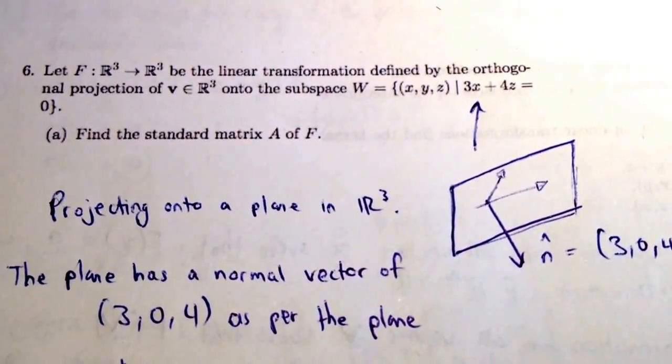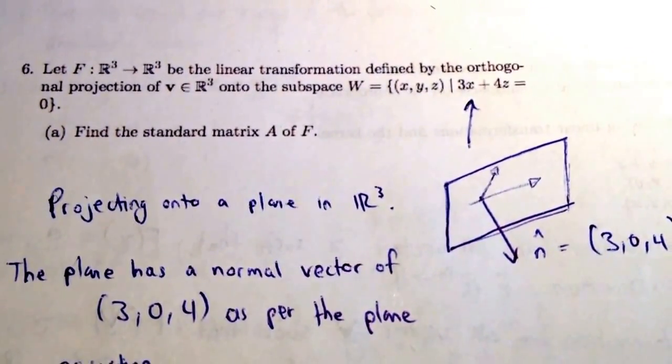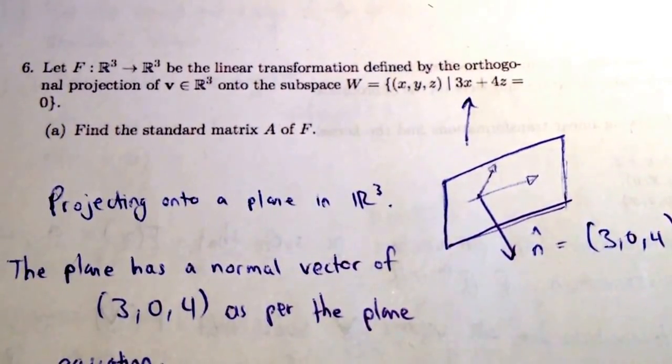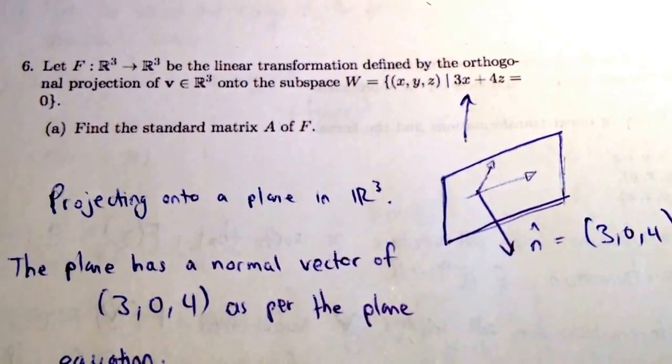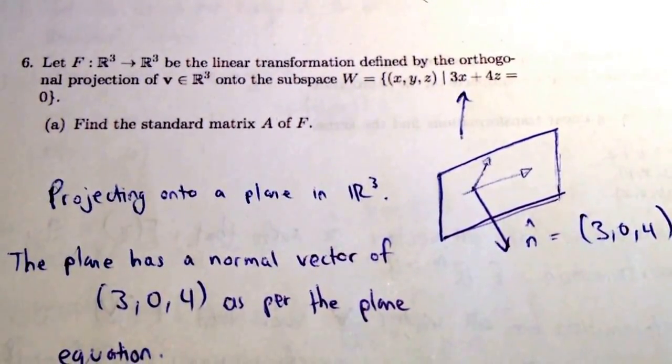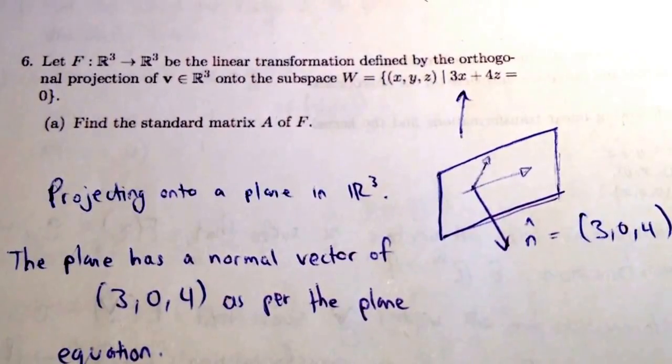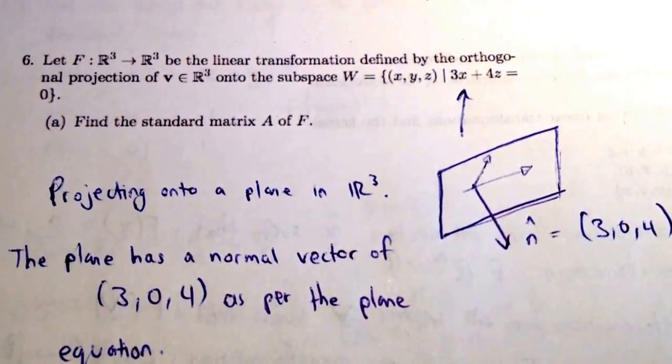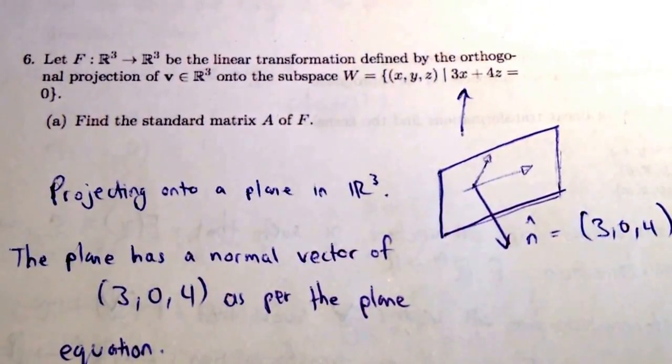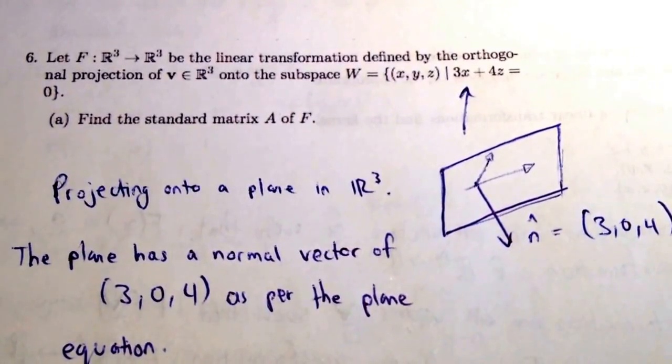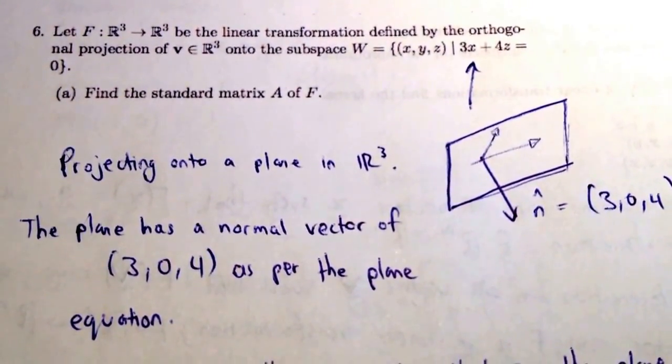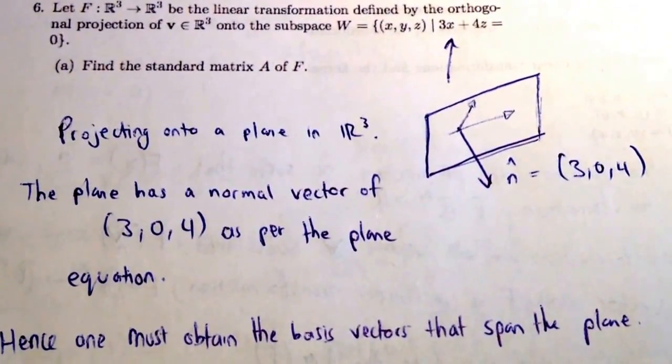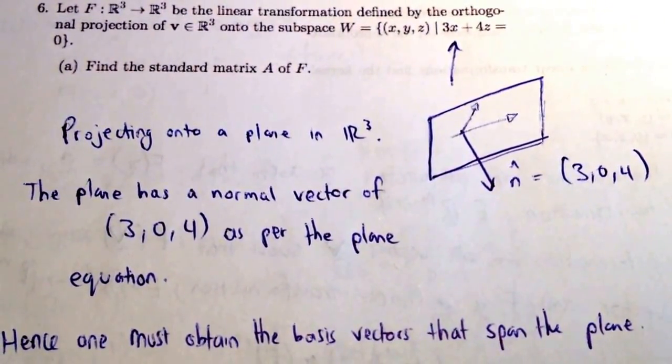Furthermore, the coefficients of the x, y, and z terms, in this case just the x and z terms, are going to be a normal vector to our plane, 3, 0, 4. So we've got normal vector 3, 0, 4. What we really want to do is project any vector that we input into our linear transformation onto our plane, and we are given the normal vector to that plane. As I've written here, the plane has that normal vector, but we want to obtain the basis vectors that span the plane, because ultimately we want to project onto those basis vectors.